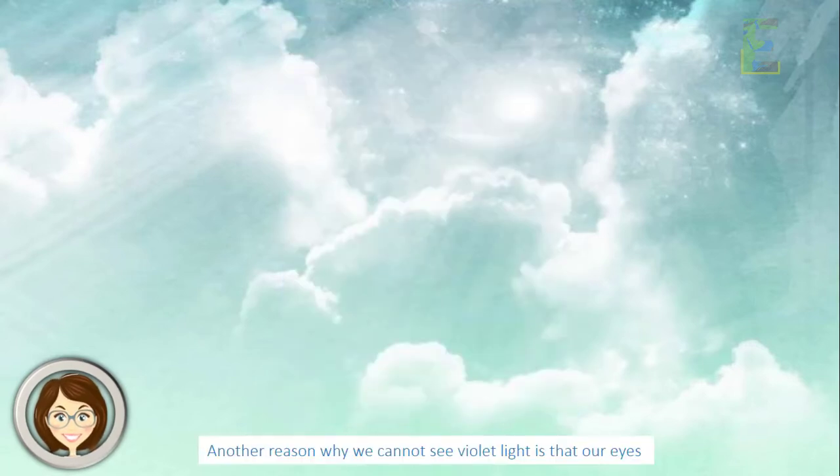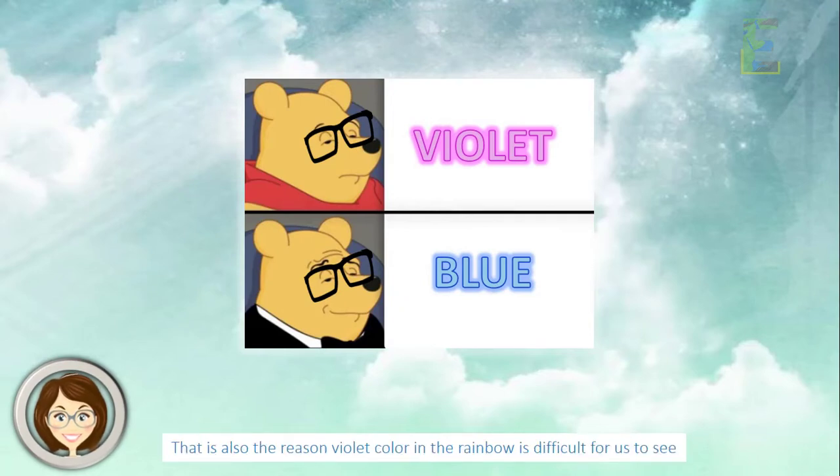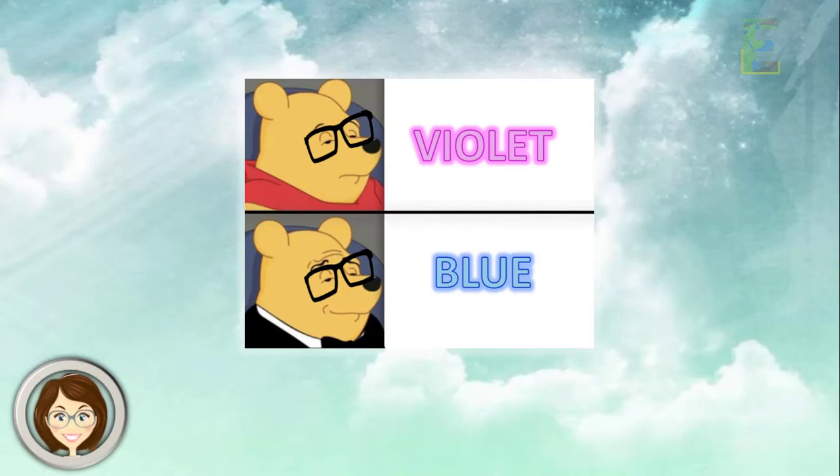Another reason why we cannot see violet light is that our eyes are less sensitive to violet light and more sensitive to blue light. That is also the reason violet color in the rainbow is difficult for us to see. And that's the reason why the sky is blue.